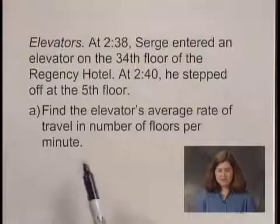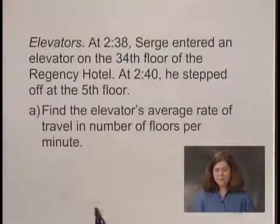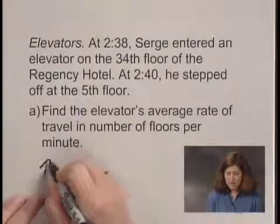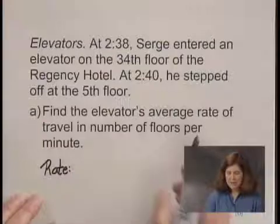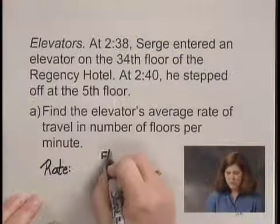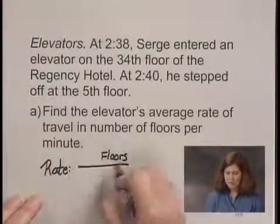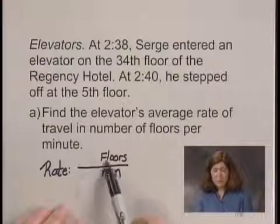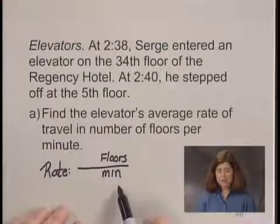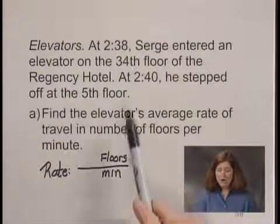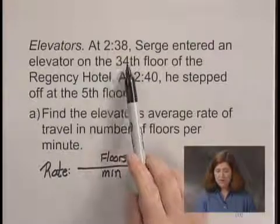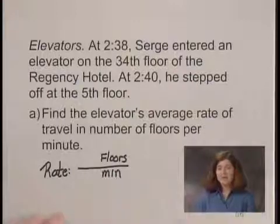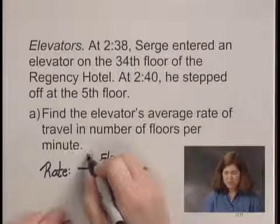We're first asked to find the elevator's average rate of travel in number of floors per minute. The rate of travel is in floors per minute — the number of floors traveled in the numerator, the number of minutes in the denominator. If he got on at the 34th floor and got off at the 5th floor, he traveled 34 minus 5, or 29 floors.